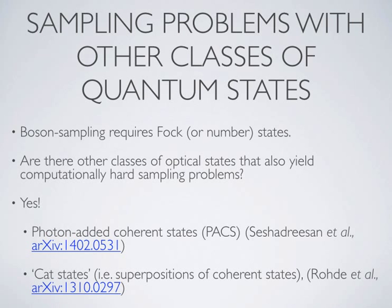A logical question is whether there's anything special about single photon states. In some recent work with my collaborators, we showed that two other classes of states probably also give computationally hard sampling problems. The first is the photon-added coherent state, formed by mixing a single photon state and a coherent state on a beam splitter to get a coherent state with an extra photon added — this is a provably hard sampling problem. The other class is cat states, which are superpositions of coherent states; we showed these also probably give a computationally hard sampling problem. So there is likely an enormous class of optical states that give computationally hard sampling problems.